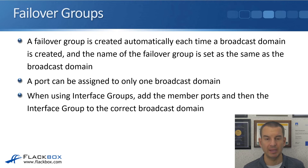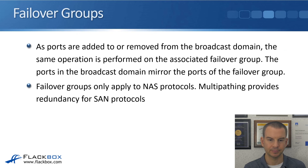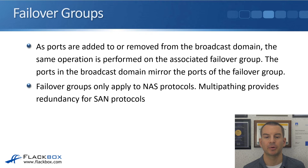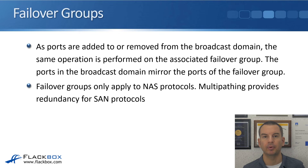A port can be assigned to only one broadcast domain. When using interface groups, add the member physical ports to the correct broadcast domain first, then add the interface group to the broadcast domain as well. As ports are added to or removed from the broadcast domain, the same operation is performed on the associated failover group — they're kept in sync. The ports in the broadcast domain mirror the ports of the failover group. Failover groups only apply to NAS protocols; SAN protocols use multipathing and do not need failover.